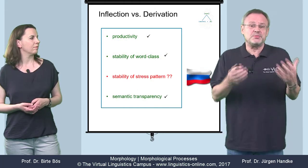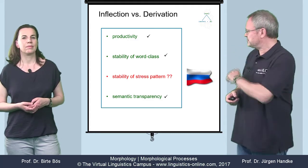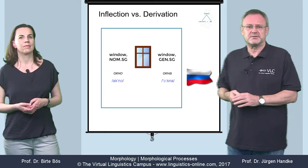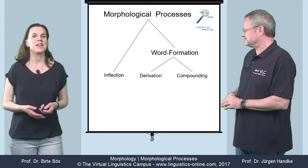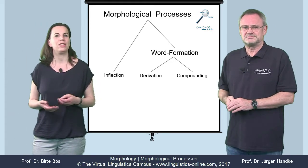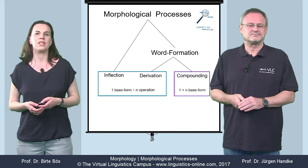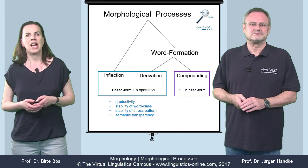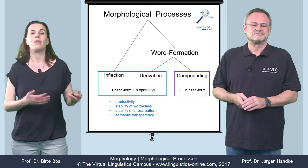In some languages, the criterion of stability of stress pattern does not work. Here is an example from Welsh, a Celtic language. Or take Russian, where the nominative and the genitive of a noun — that is, case inflection — may involve different stress patterns. To summarize: morphological processes define different ways of building words. Formally, a distinction can only be drawn between compounding and the other processes. For this reason, we need additional criteria such as productivity, the stability of the word class, the stability of the stress pattern, and semantic transparency to keep inflection and derivation, and more generally, inflection and word formation apart.